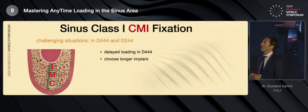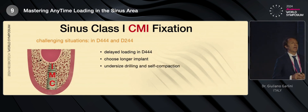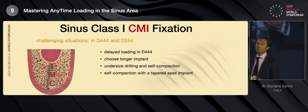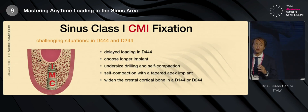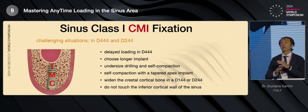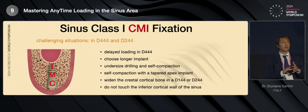In the other situation, when you have D244, you can choose a longer implant, you can use — as you have already seen — an undersizing drilling and a self-compaction. You must use a tapered apex implant like ES2 or ES3 implant. And with D1 and/or D2 bone in the crestal area, you have always to be gentle, you have always to widen the crest with a cortical burr. This is very important. Last but not least, do not try to touch the inferior board of the sinus — stay away from it — because if you try to touch, you have the possibility to reach a very low stability.